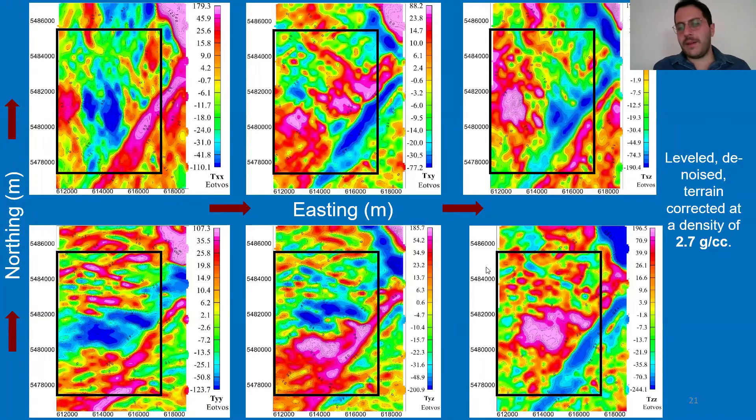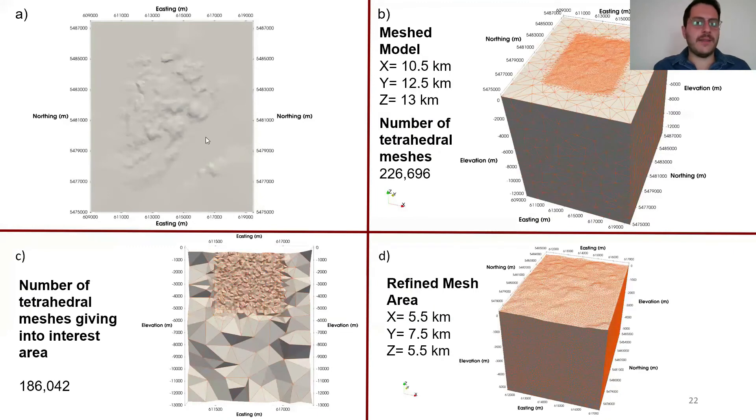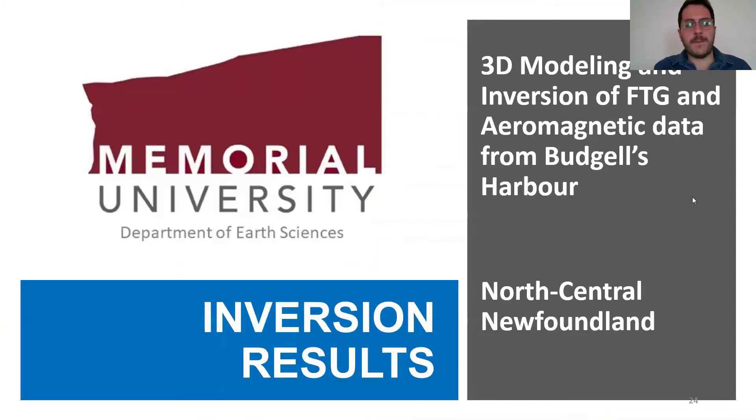Our goal was to see this gabbro intrusion into our model. The rectangular black box here shows our core of interest area. We start with integrating the topography and bathymetry information into the model. As you can see from figure A and figure B, by using TGEN, we generated 3D unstructured tetrahedral meshes. From figure B, you can see in the middle of the figure the refined mesh area. This is actually representing our core of interest area. We refined this area because it increases the accuracy.